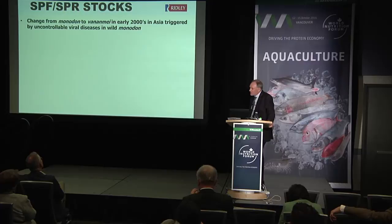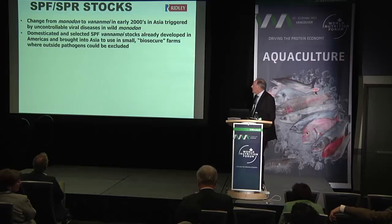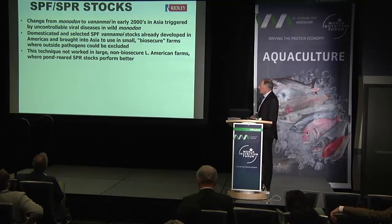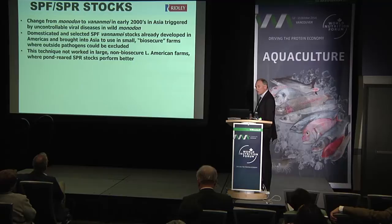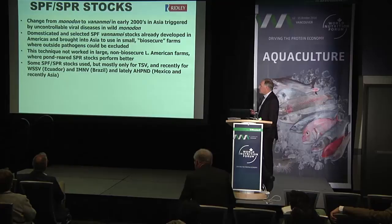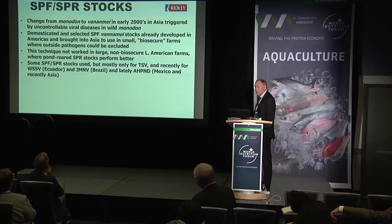Regarding SPF and SPR stocks: the introduction of domesticated, selected Vannamei from Latin America into Asia spurred the change from Monodon and the massive increase in Asian production. This was because SPF stocks were already domesticated and in some instances selected for improved disease resistance and faster growth. But the SPF paradigm didn't really work in large, extensive Latin American farms — they had to go for specific pathogen resistant animals selected in the farm itself. When SPF stocks went into those ponds, they were free of disease, but didn't stay that way long. There are now SPR stocks for Taura, White Spot, IMNV in Brazil, and lately some developed for AHPND in Mexico and Asia.